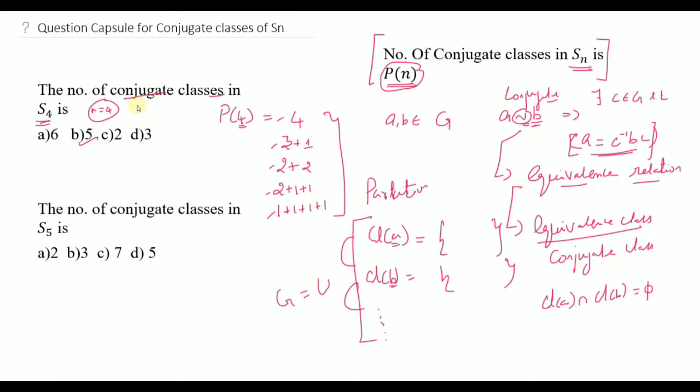This is a simple problem — you can use the result directly and solve it. The number of conjugate classes equals the number of partitions of N.